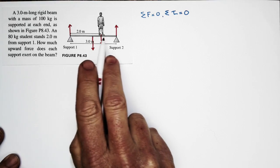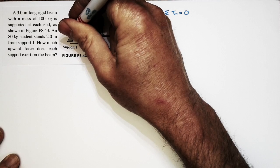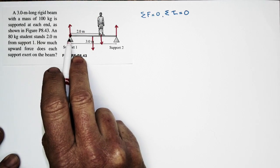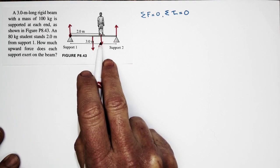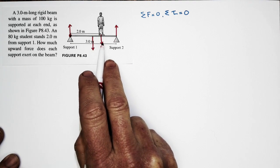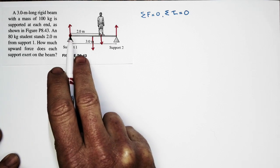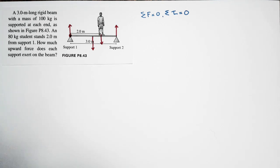We don't know the force from either support. To simplify our calculation, we'll take our pivot point right at support 1. If we take the pivot point there for calculating torques, the torque due to support 1 is eliminated since it acts at the pivot, while the torques due to the other two forces are known. This lets us calculate the force from support 2 without carrying an extra unknown.